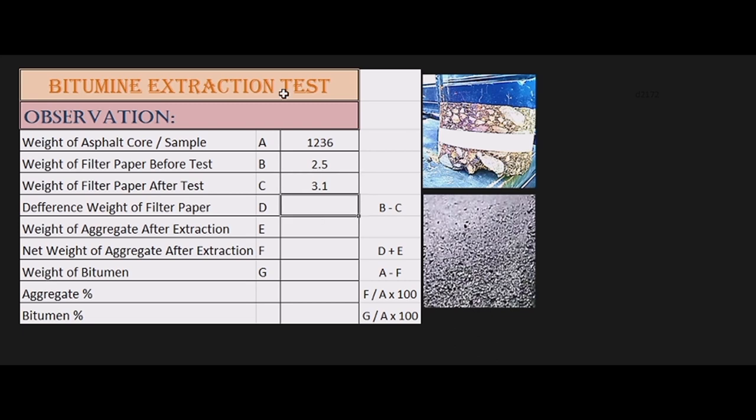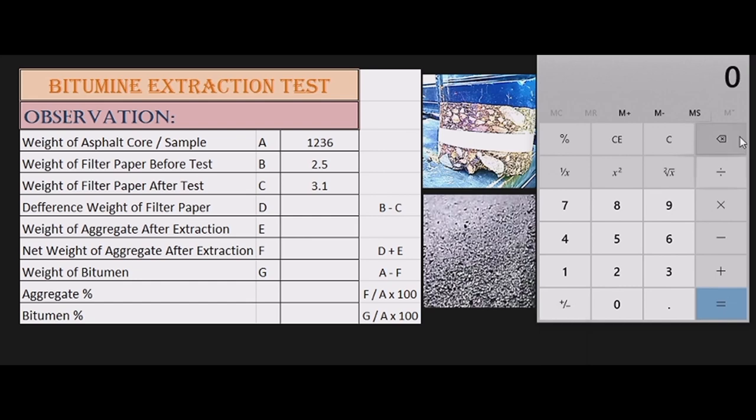B minus after test, 3.1 grams, minus before test, 2.5 grams, equals 0.6 grams difference in weight of filter paper.